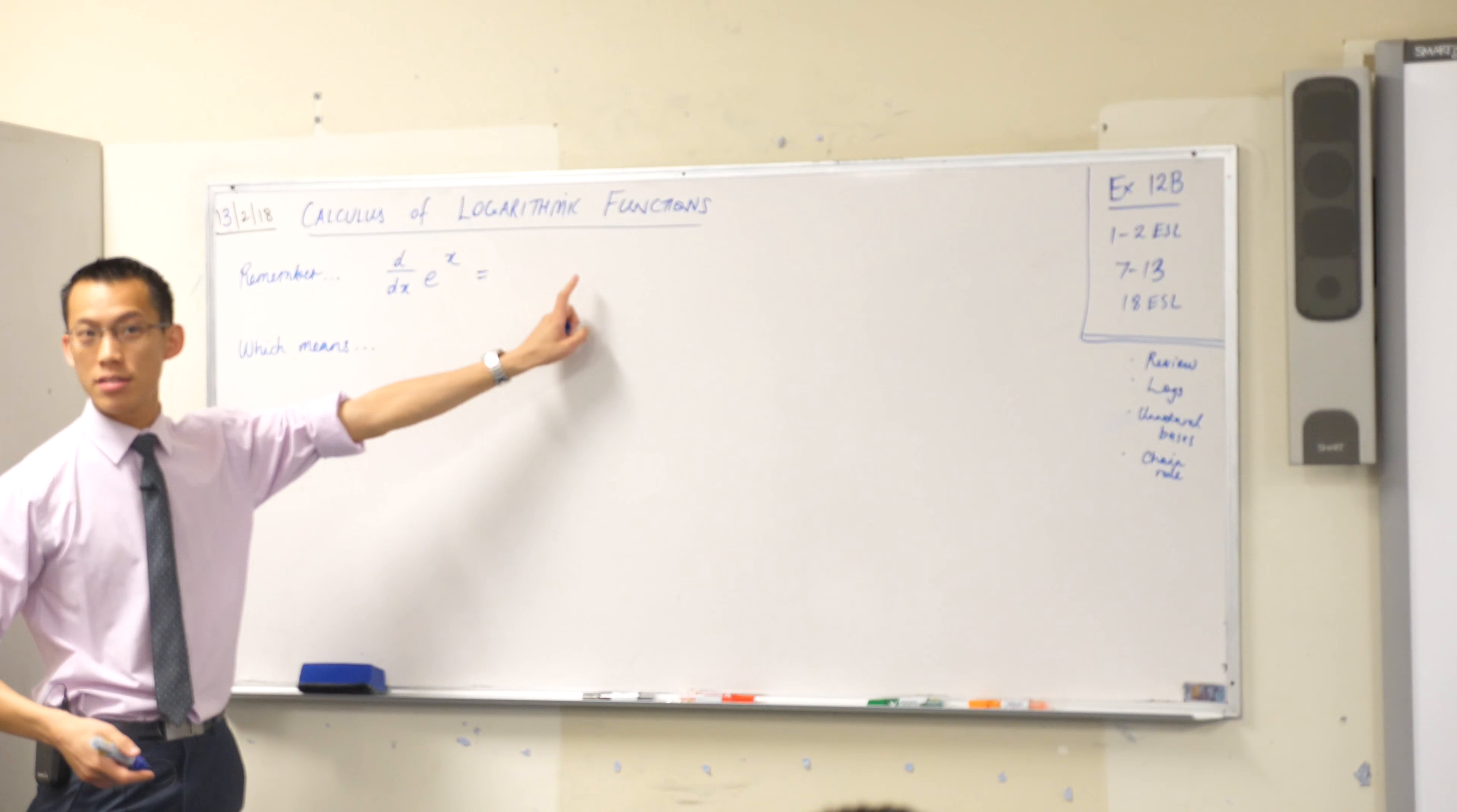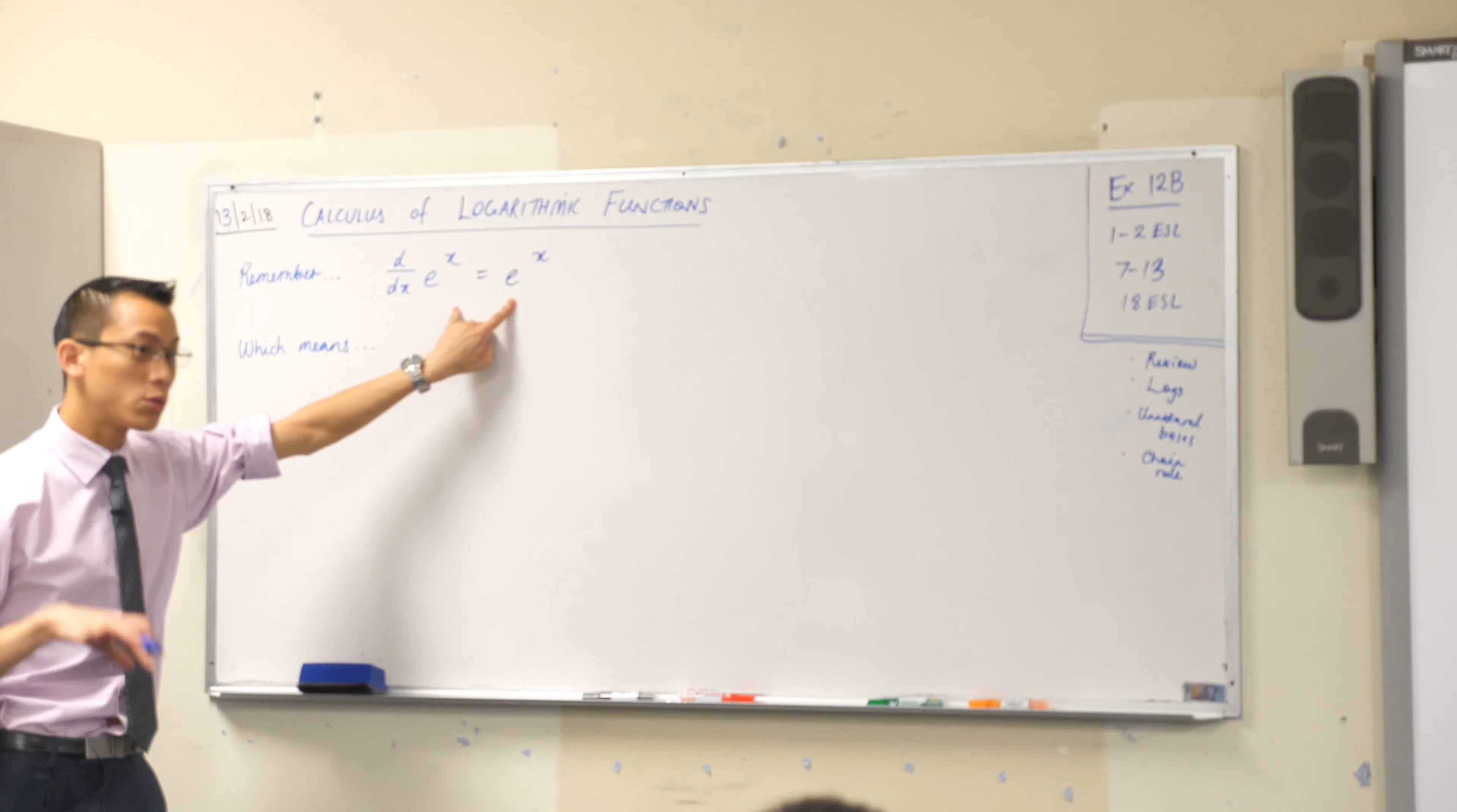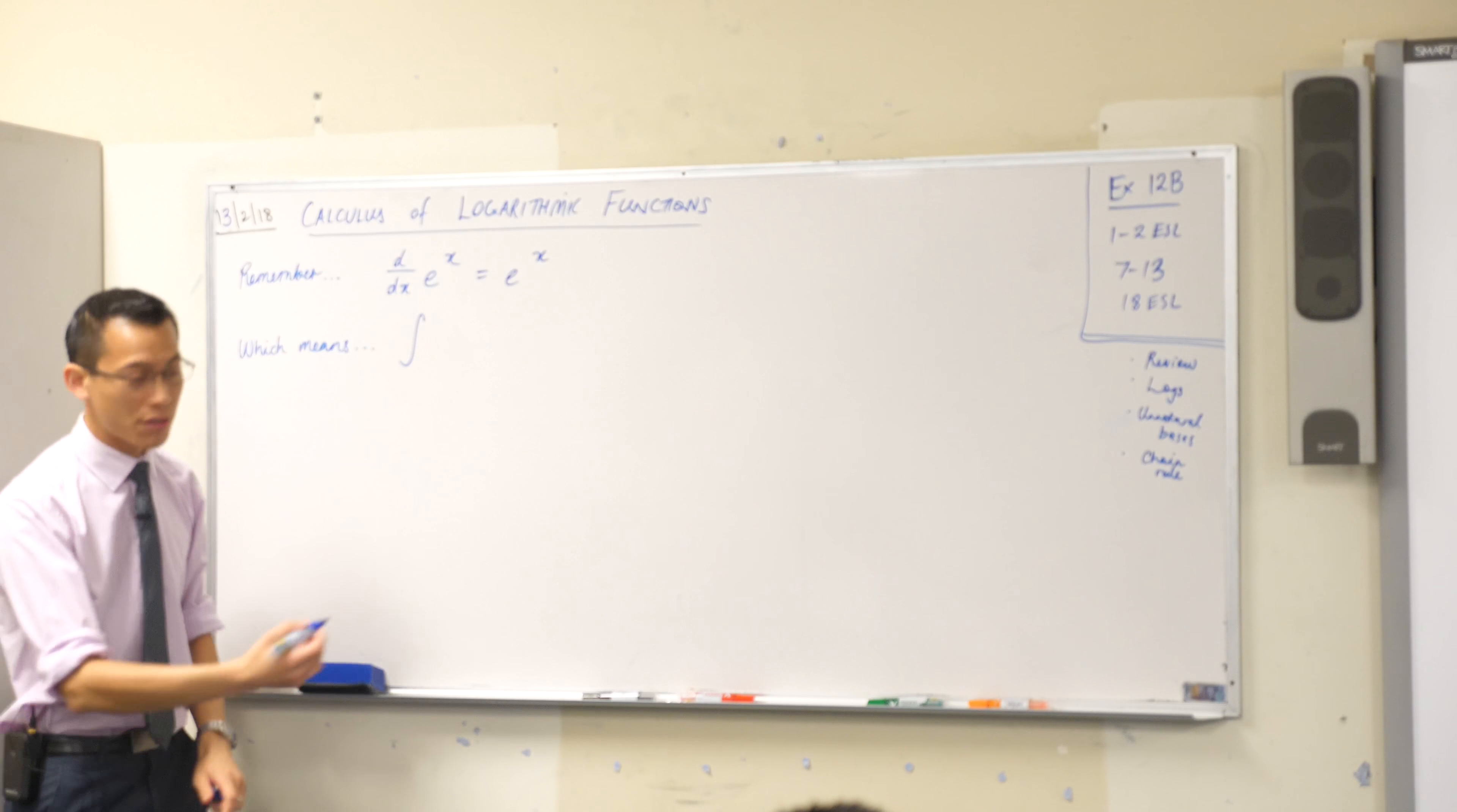The derivative of e to the x is of course just e to the x. Now we haven't really talked about this very much, though some of the questions may have touched on it. Every time you learn something about differentiation, that tells you something about integration, right, because they are reverse processes. So if the derivative of e to the x is e to the x, it stands to reason that the integral...